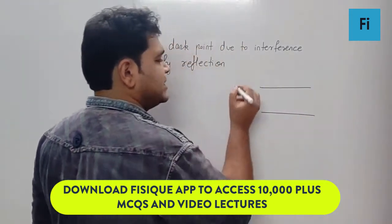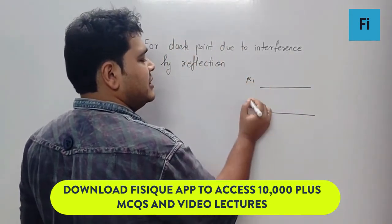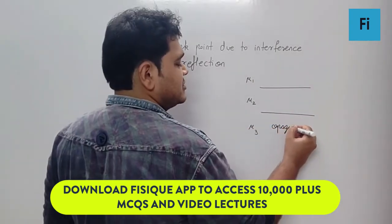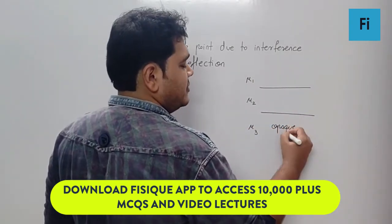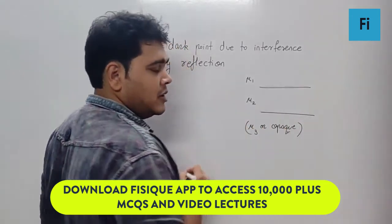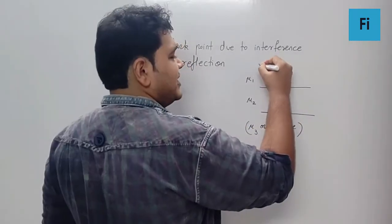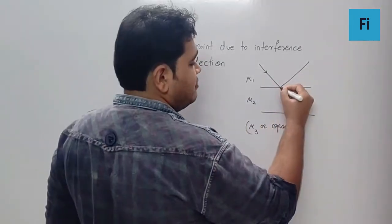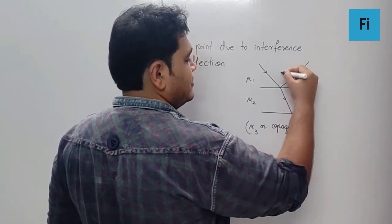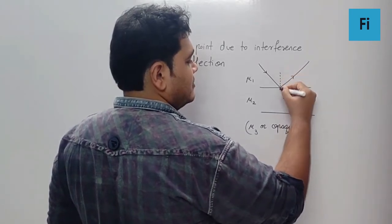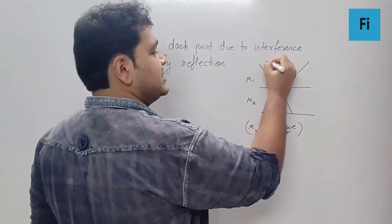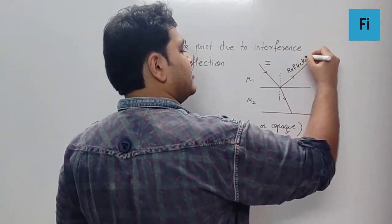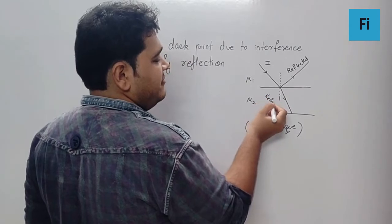It could be anything. In that scenario, the light is coming from here and it gets partially reflected and partially refracted. So this is my incident ray, this is my reflected ray, and this is the refracted ray.